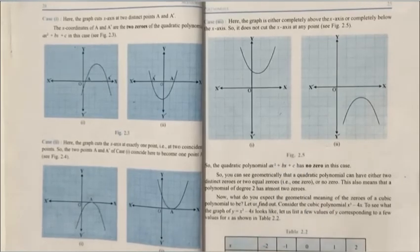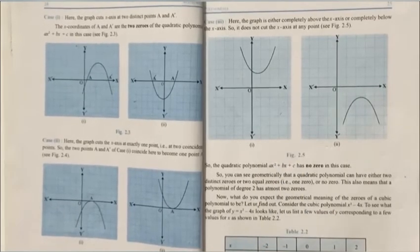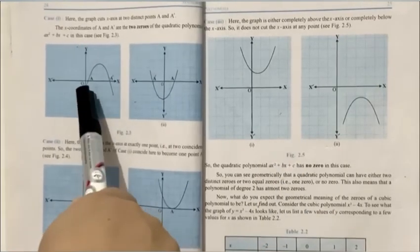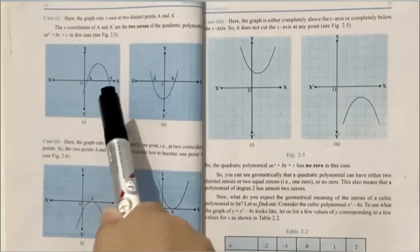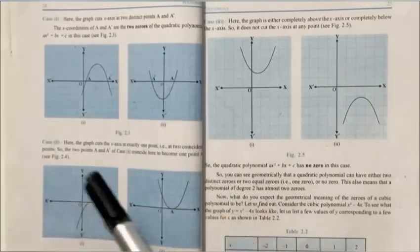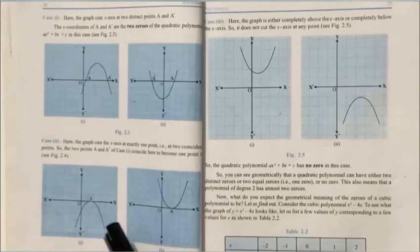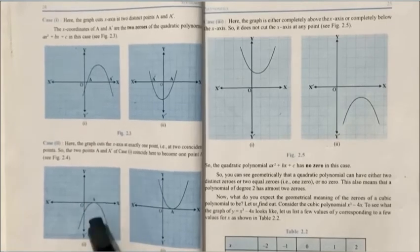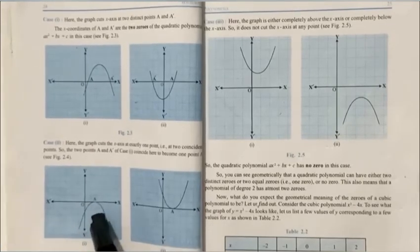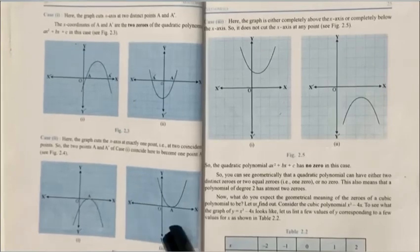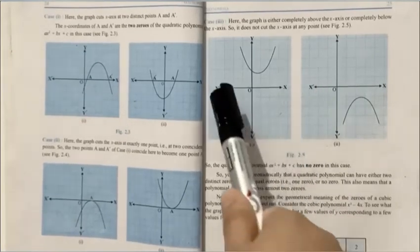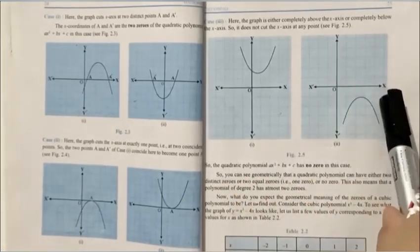Now you can easily see all the possible cases of quadratic polynomial here. In case number 1, the graph cuts the x-axis at exactly two different points A and A'. In case number 2, the graph cuts the x-axis at exactly one point. Here A and A' coincide to become A. In case number 3, the graph does not cut the x-axis at any point.